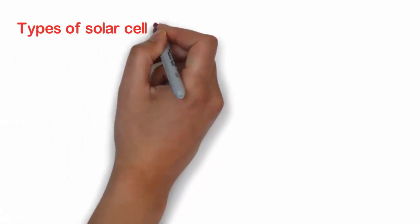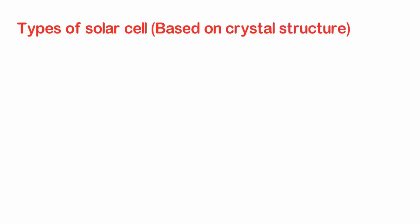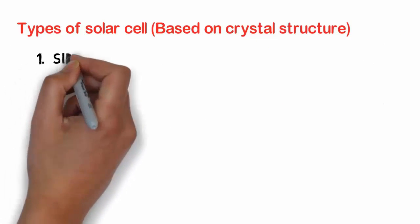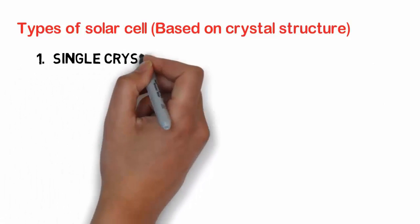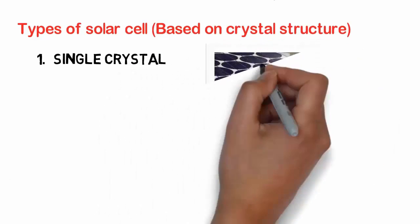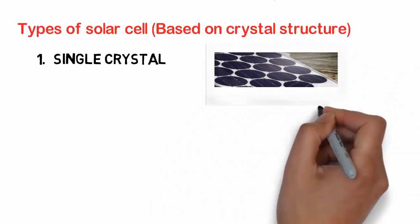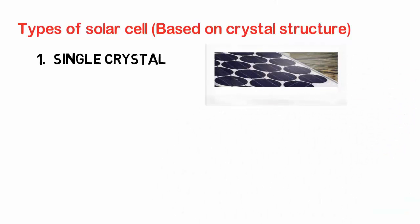Based on the crystal structure, solar cells can be divided into three types. Number one, single crystal. This is made by using only a single crystal of the material. This is the most efficient solar cell, but there are some drawbacks. Because of the single crystal, its size is limited and also it is the costliest among all types of solar cell.